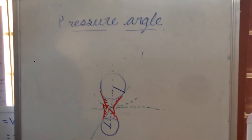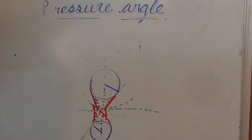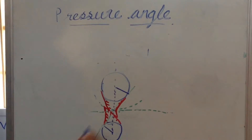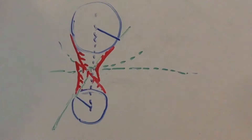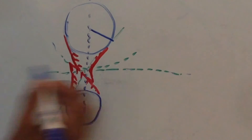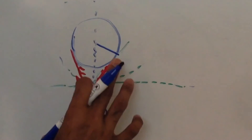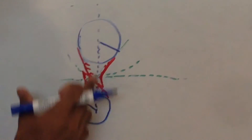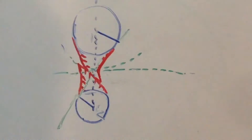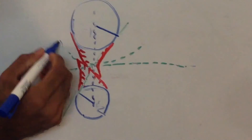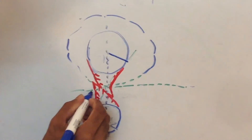Let us talk about the pressure angle of involute teeth. Here you can see a point P, where point P is defined as the pitch point. It is defined as the intersection point of the line of action and line of centers, that is O1 and O2. Here a circle is drawn around this, and it is known as the pitch circle.